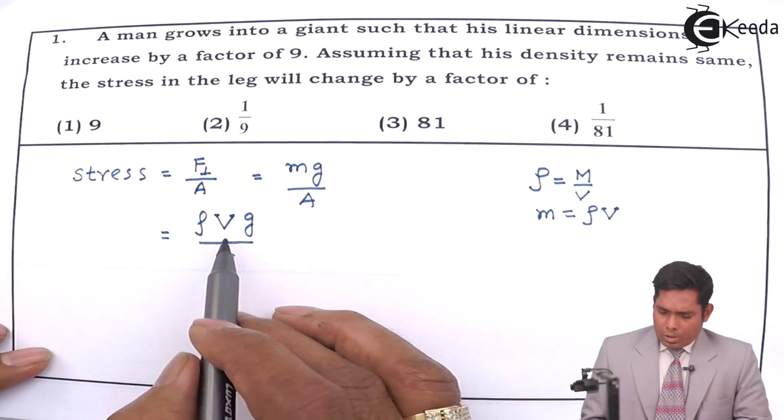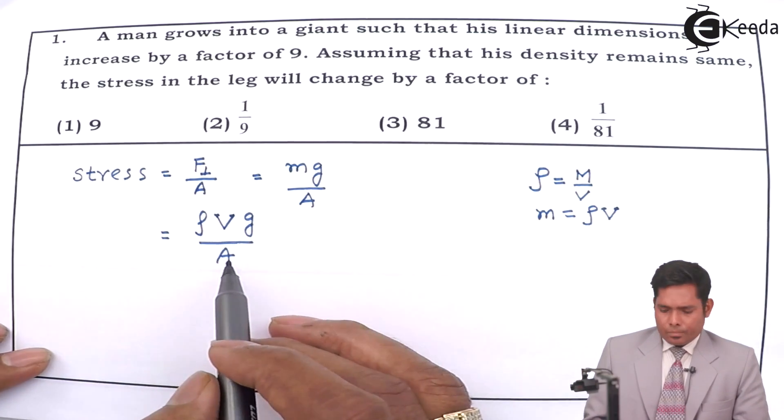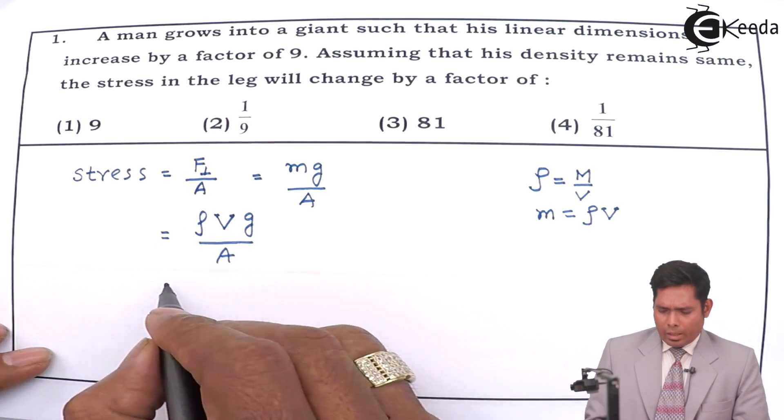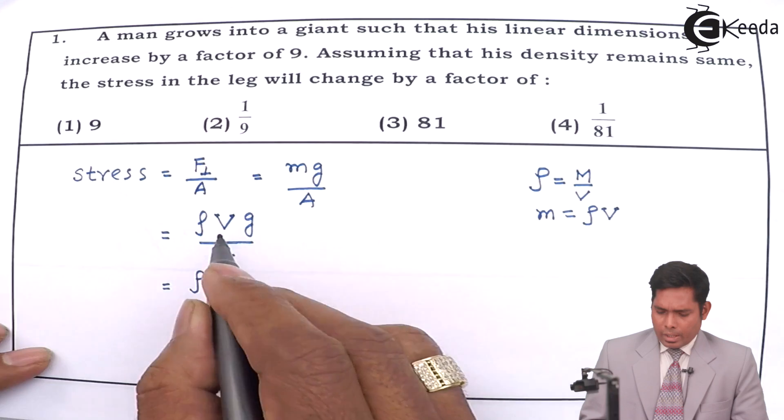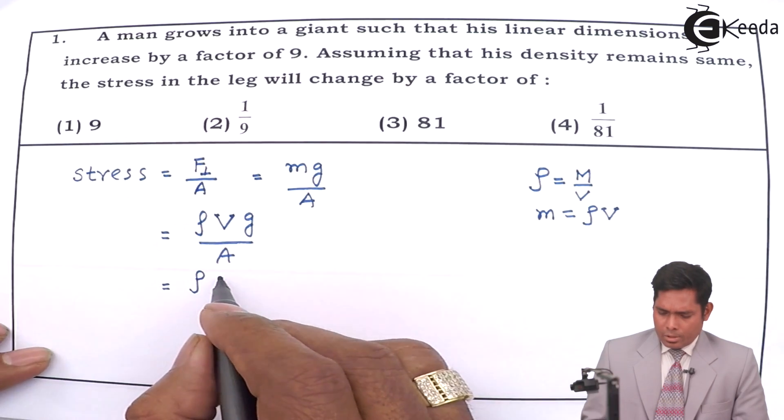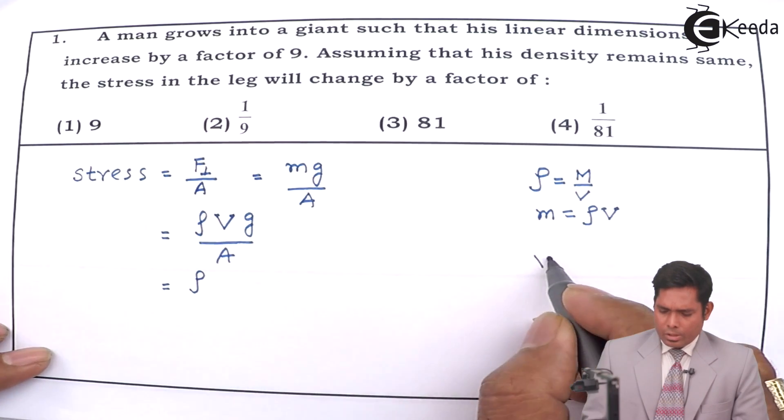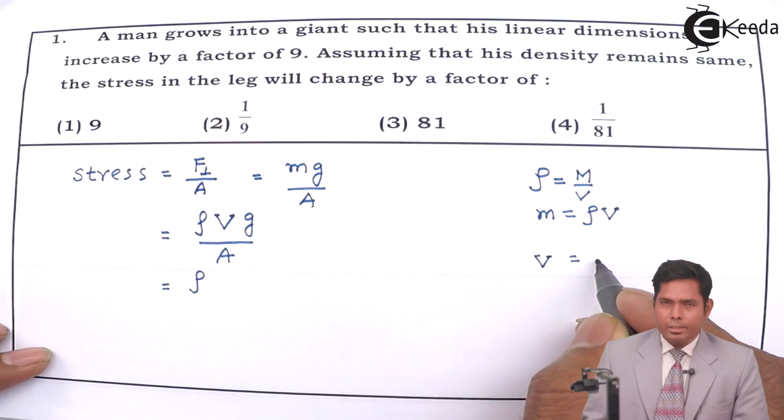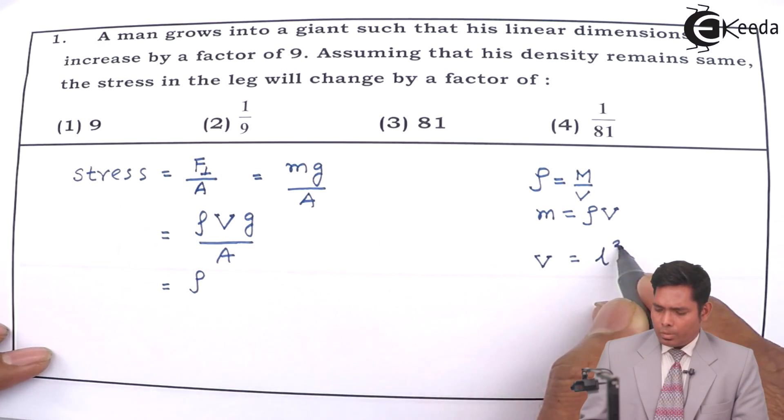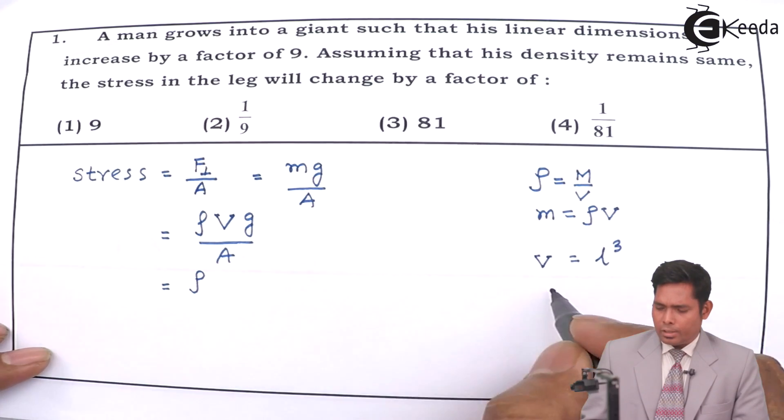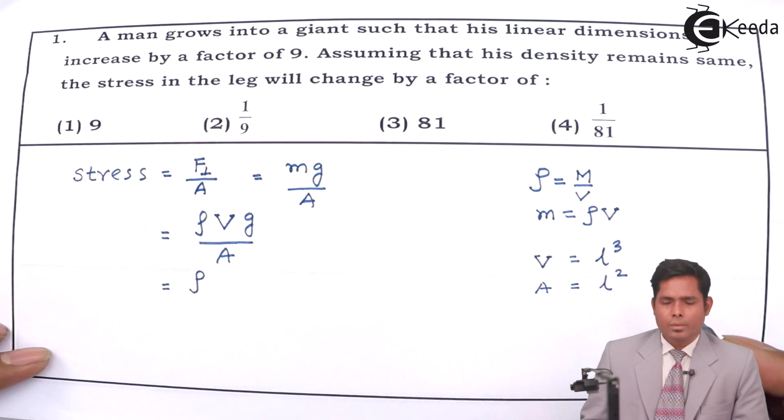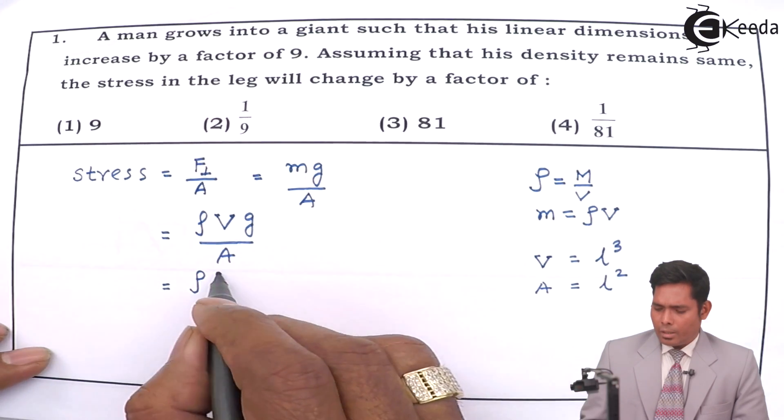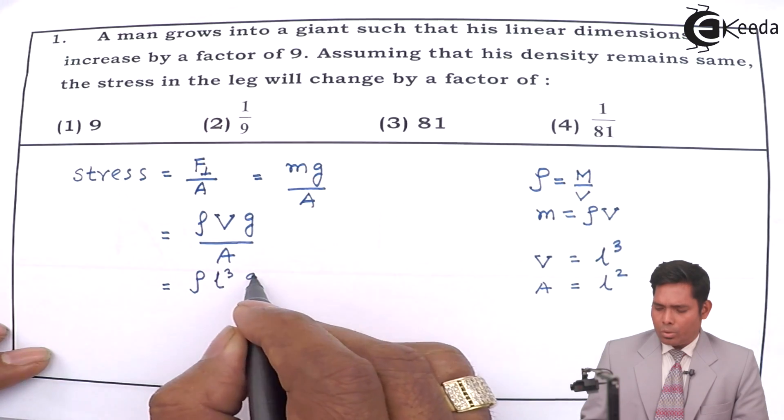Now, this is constant, g is also constant. Then, how V and A are related, we can write that this density, volume I can write in terms of linear dimension, volume in terms of linear dimension is L to the power 3. Area is L to the power 2.